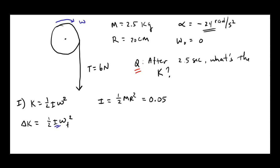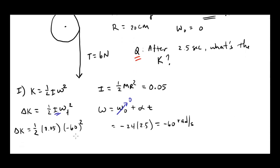I'm going to use one of our angular kinematic equations: omega equals omega initial plus alpha t. Omega initial is 0, so omega equals negative 24 times t, which for our problem is 2.5. That's negative 60 radians per second. Now I can solve for the kinetic energy because I know I and omega. Delta K is 1/2, 0.05 times negative 60 squared. We end up with a kinetic energy of 90 joules.